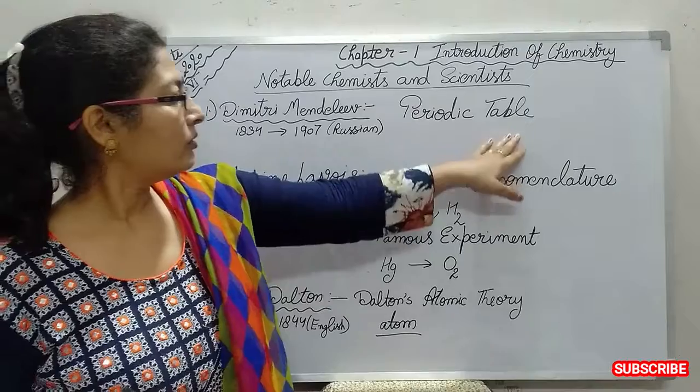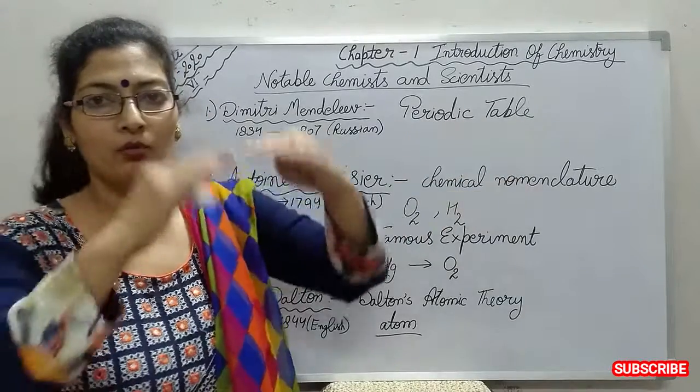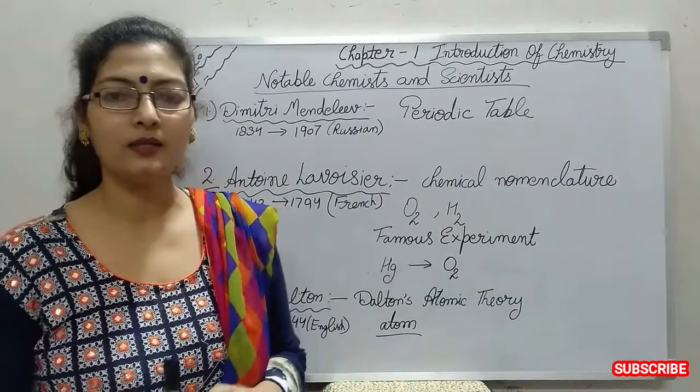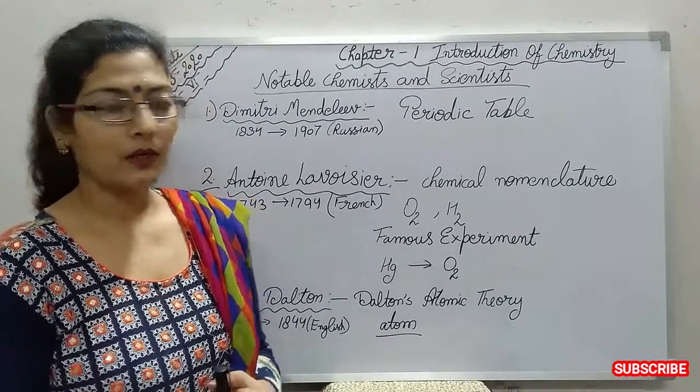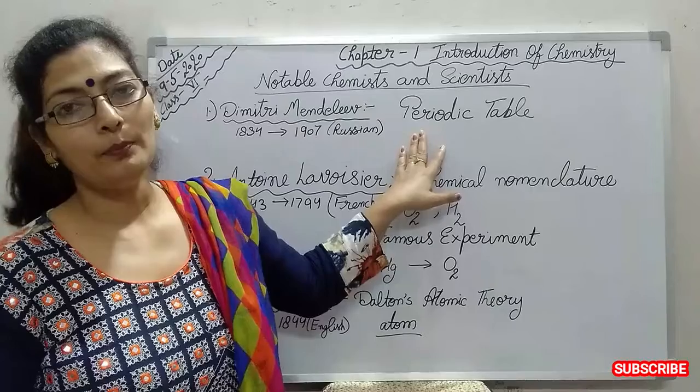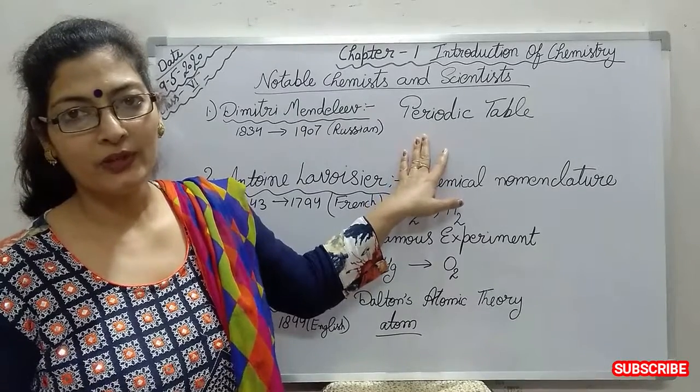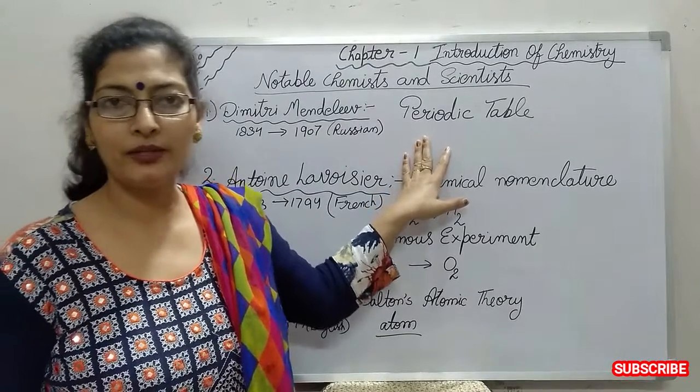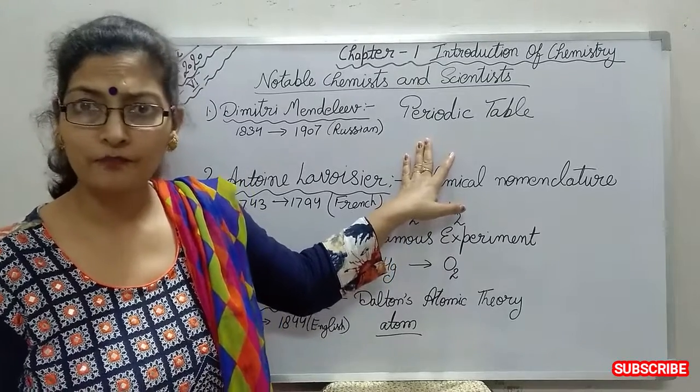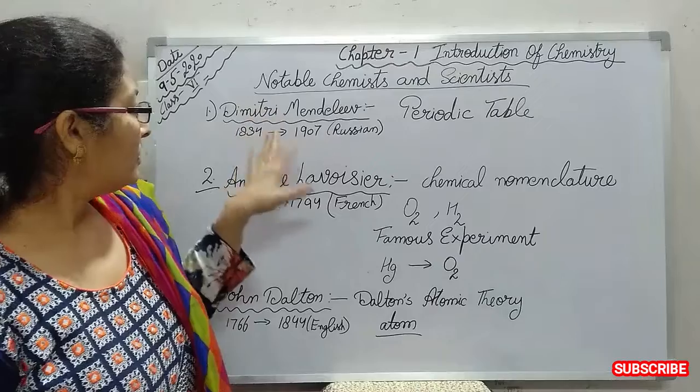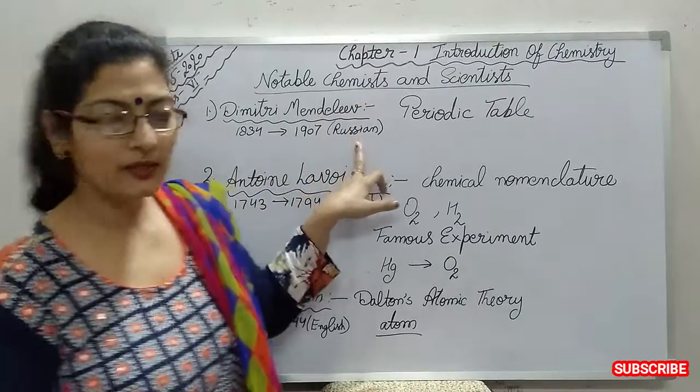According to their atomic mass. That was called the periodic table. He formulated the periodic table and arranged the elements according to their atomic mass. He was a Russian scientist.